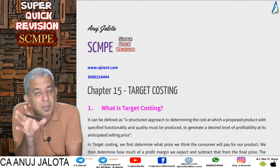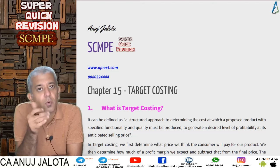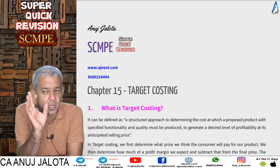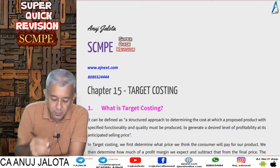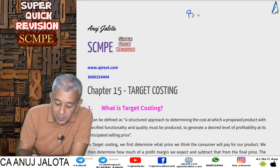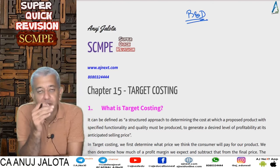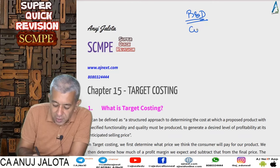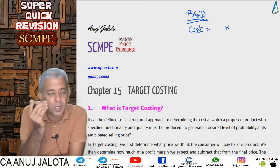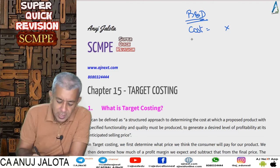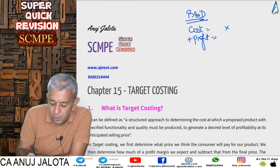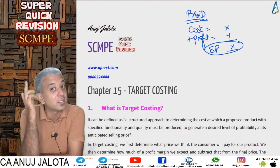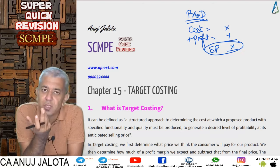Originally, when a technique like target costing was not there, we would think of a product idea, do our research and development, then try to take it to the market and produce it on a larger scale. We would incur costs, use activity based costing to find our cost, add a profit margin, and that's how we fixed the selling price. But then this selling price might not be the final selling price based upon external factors.